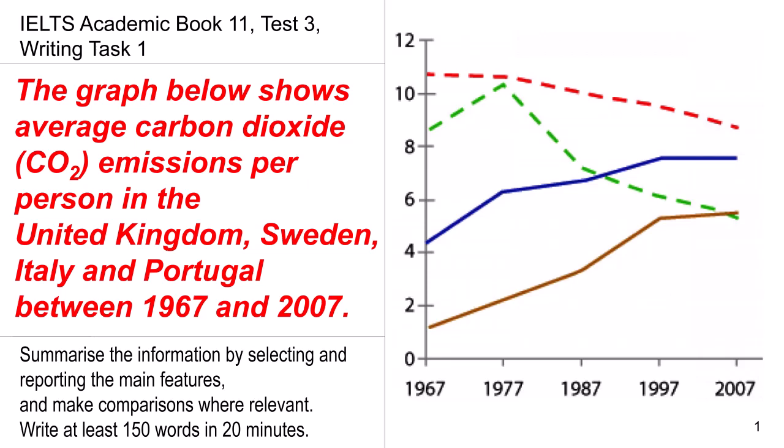Today, we are going to discuss the IELTS academic book 11 test 3, the writing task 1. The graph below shows the average carbon dioxide emission per person in the United Kingdom, Sweden, Italy and Portugal between 1967 and 2007.